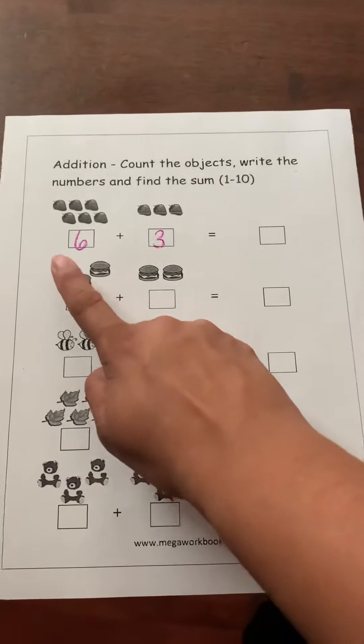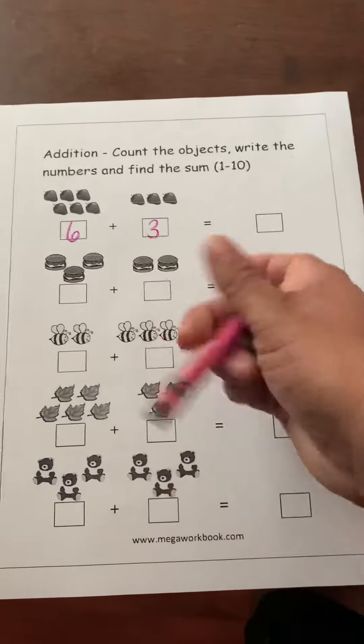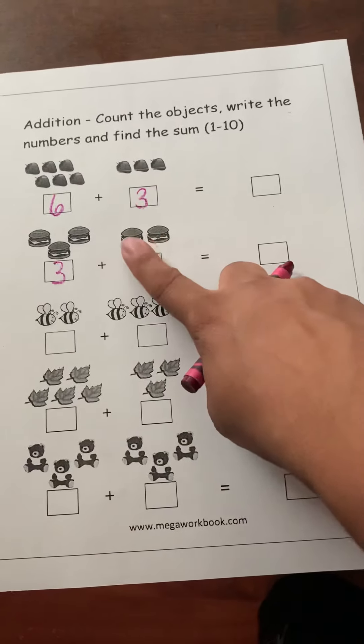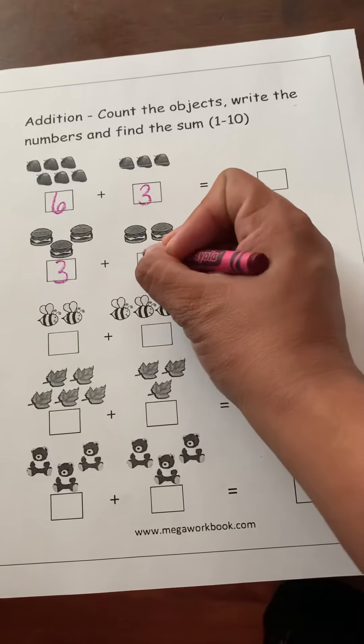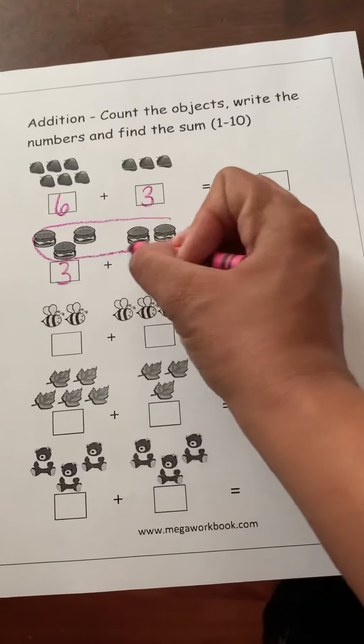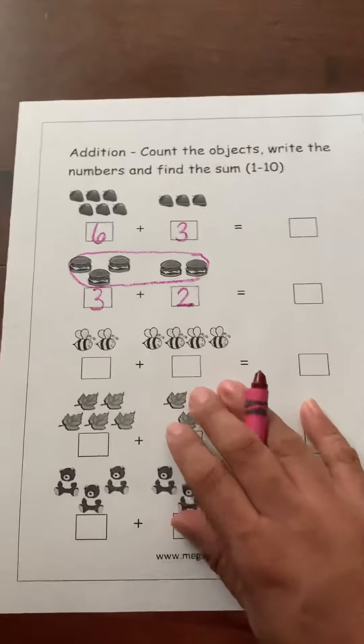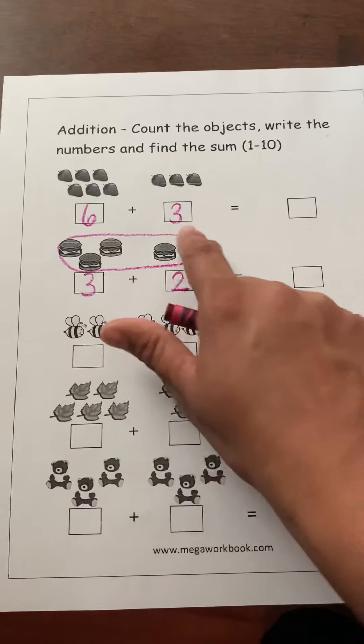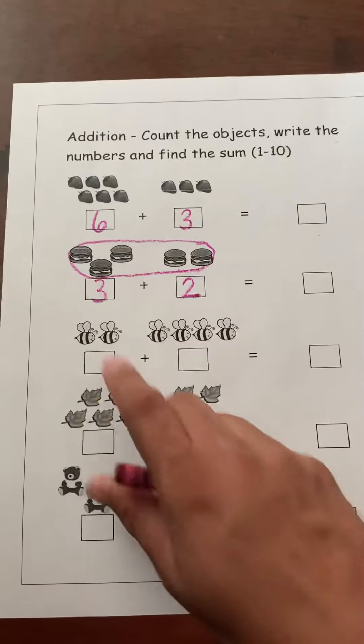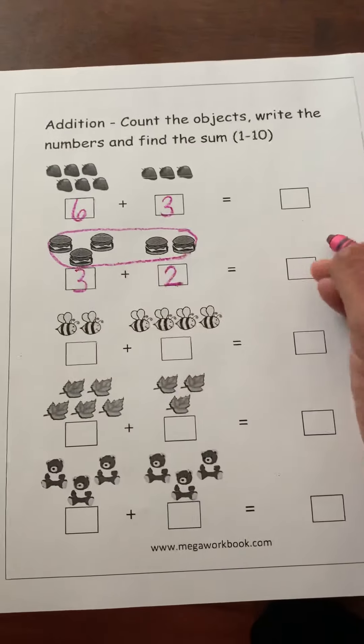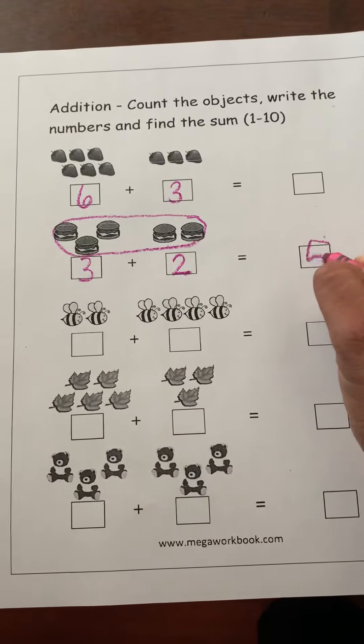So they're just going to count one, two, three. Write down the number. Count here. How many hamburgers? One, two. And then you're going to tell them again, okay, we're going to count all together. How many? And so if they need that extra prompt, you can circle this too so they know that we're counting all of them. So they're just going to go one, two, three, four, five. And you're going to write the number five.